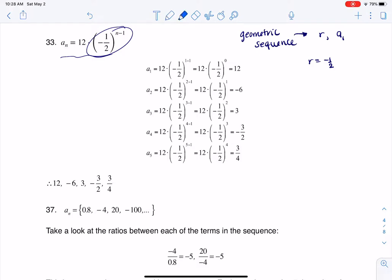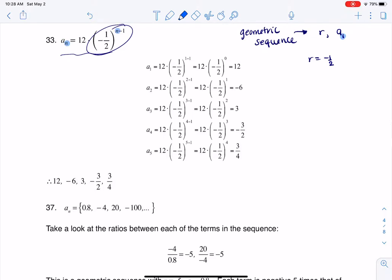And if I want to find a sub 1, what I'm going to do here is take n and substitute it with 1. That's actually part of the first problem, to find a sub 1, and that's what you see me doing right here. I find out that a sub 1 is equal to 12.